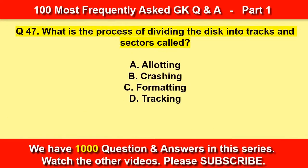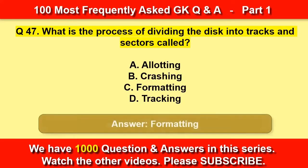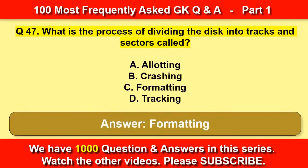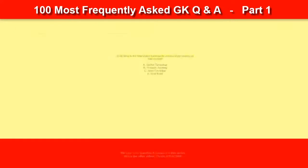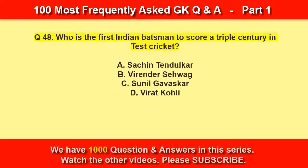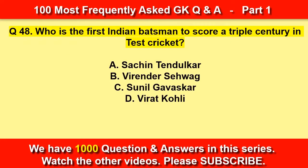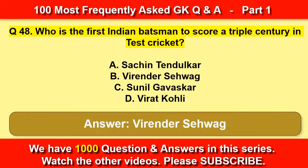What is the process of dividing a disc into tracks and sectors called? Formatting. Who is the first Indian batsman to score a triple century in test cricket? Virender Sehwag.